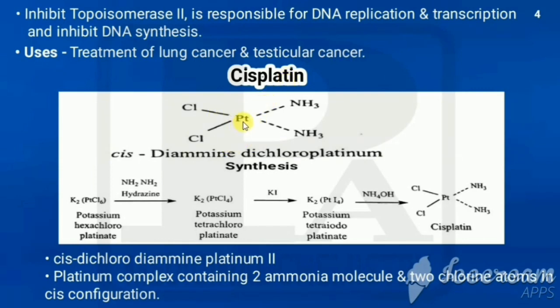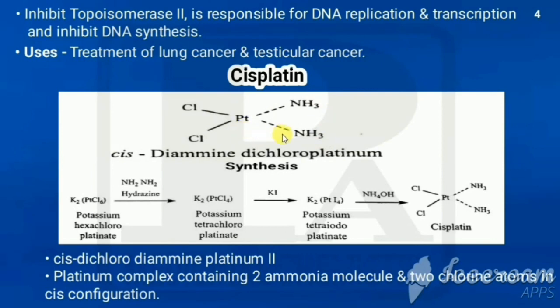Next is cisplatin. In its structure, the center has a platinum atom with two chlorine atoms and two ammonia groups. Similar groups are attached on the same side, which is why it is called 'cis' — cis-diamminedichloroplatinum.